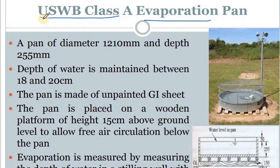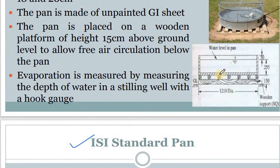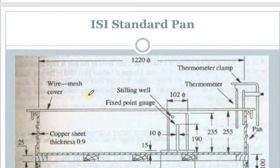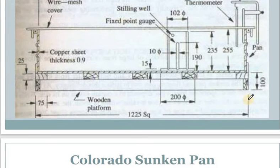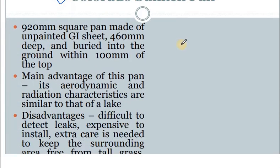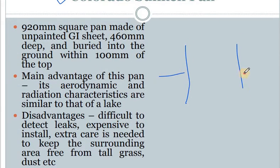We have various types of instruments available. The first is the USWB Class A evaporation pan — the description and diagram I have already explained in the previous class. The second one is the ISI standard pan, the diagram for which is given here. If you have not seen my previous video, please try to see it so you'll understand easily.